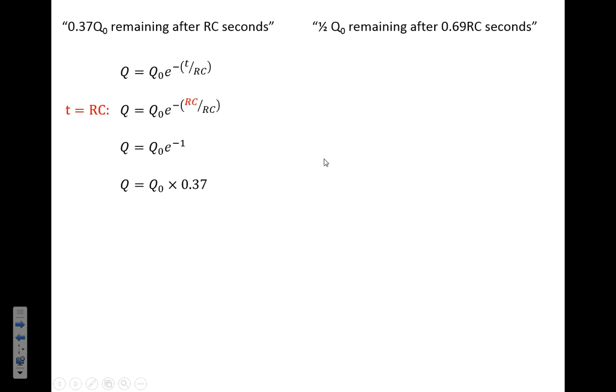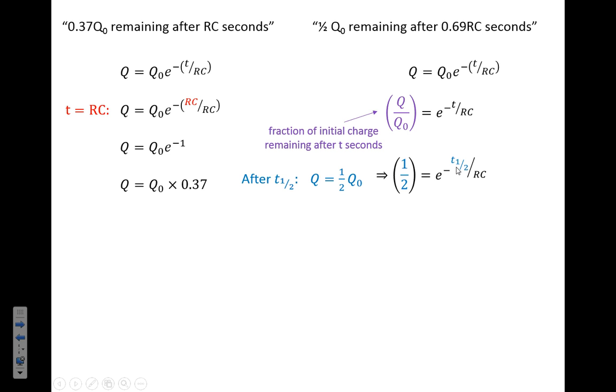Then the next one: we've got half the charge remaining after 0.69 RC seconds. So again we're going to start from there. We're going to divide across so we've now got the fraction of the original charge remaining, and that's going to be, this fraction is going to be a half when we've had the halving time. So I'm going to write this down here: this fraction is half when we've got the halving time. What we're going to do is take natural logs of both sides and then tidy it up, and we end up with, if we solve all of this, the halving time is 0.69 RC seconds.